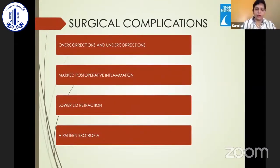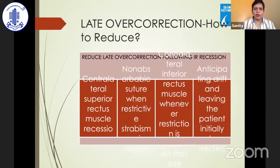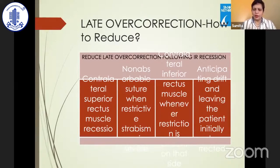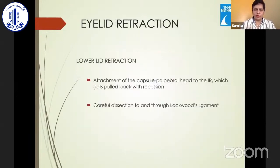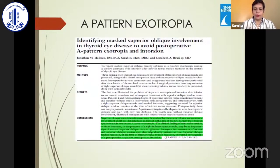Complications of surgery include overcorrections — especially late overcorrections — which are very common, marked post-operative inflammation, and lower-lid retraction. The most difficult complication to deal with is A-pattern exotropia, which is very common especially with bilateral inferior rectus recessions. Muscle slippage is known. One way to reduce late overcorrection is to combine surgery with contralateral superior rectus resection using a non-absorbable suture, match duction by forced duction, perform a Faden procedure on the contralateral side, and discuss this problem with the patient before surgery. Eyelid retraction is also common; good dissection with Lockwood's ligament and lower-lid retractors will partially solve this problem.